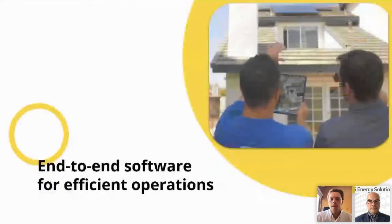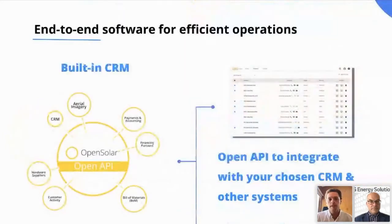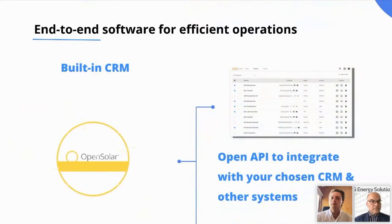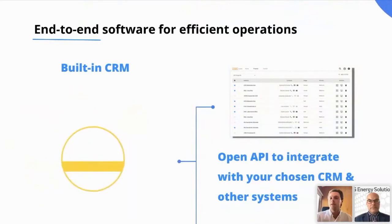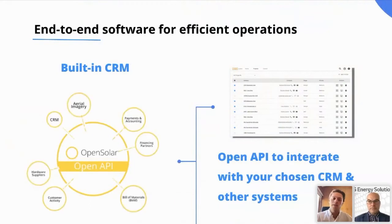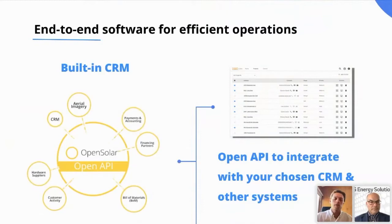So just to wrap things up — end-to-end software for efficient operations. We've recently released the Open Solar API, which we're really excited about, so you guys can get your current systems plugged in to our software. You might be using Myob for accounting, or HubSpot or Salesforce as your CRM. And now with our Open API, you can integrate that so the systems can talk to each other, eliminating double entry and rework. Keeps it all nice, distinct and streamlined.